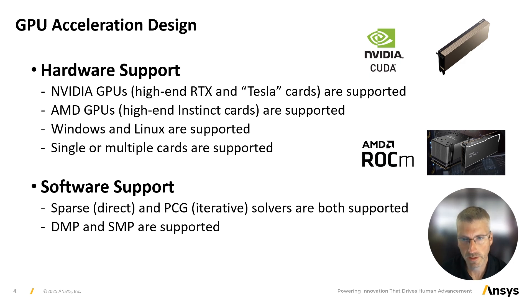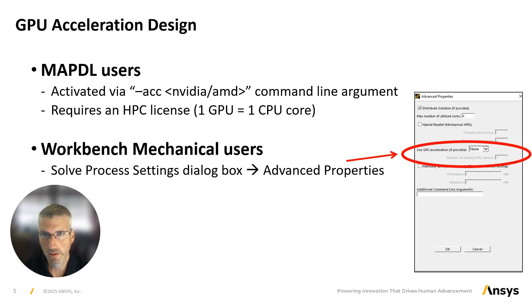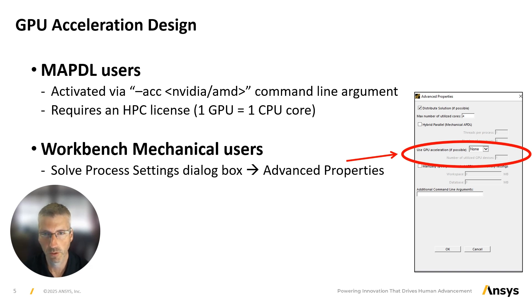Users can run their simulations on either a single GPU card or take advantage of multiple GPU cards. The program does not automatically detect the presence of a recommended GPU card and use it, so just having the card installed and working is not sufficient to accelerate your mechanical simulations. In Workbench Mechanical, you must go to the Solve Process Settings dialog box, and under Advanced Settings, use the highlighted drop-down box to select either NVIDIA or AMD GPU hardware. This will tell the Mechanical APDL program to check out the necessary HPC license, check for a valid GPU card, and ultimately accelerate the solver calculations on the GPU device. If you're an MAPDL user, you would add the dash ACC command line option to select this feature.